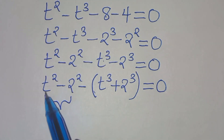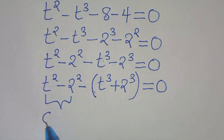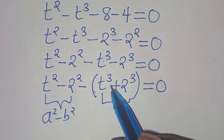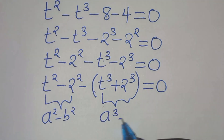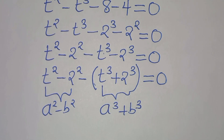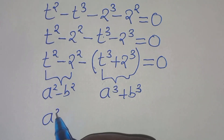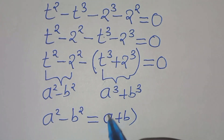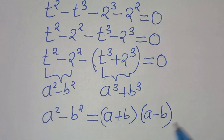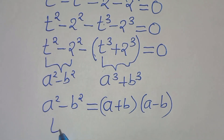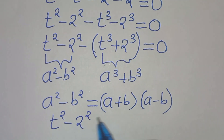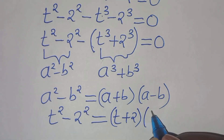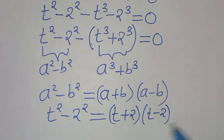We have two parts here. The first is the difference of two perfect squares: a squared minus b squared. We apply the identity a squared minus b squared equals a plus b multiplied by a minus b. So t squared minus 2 squared equals t plus 2 multiplied by t minus 2. Let's call this equation 1.